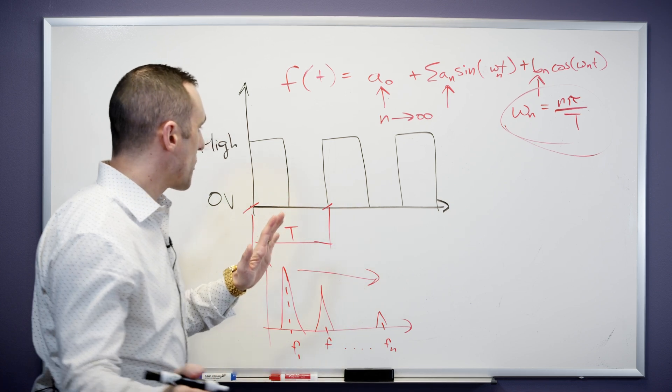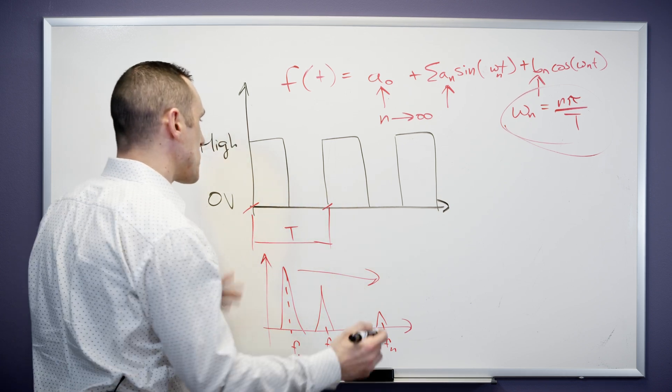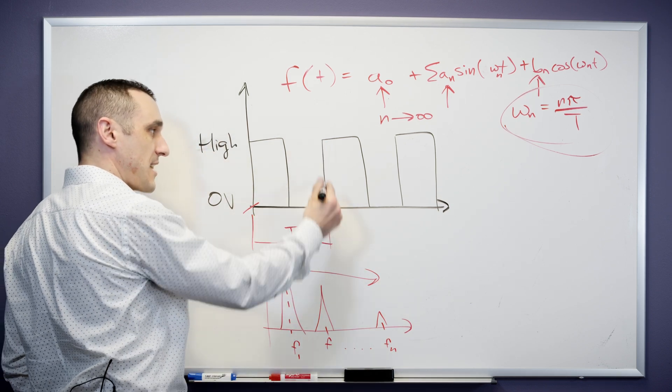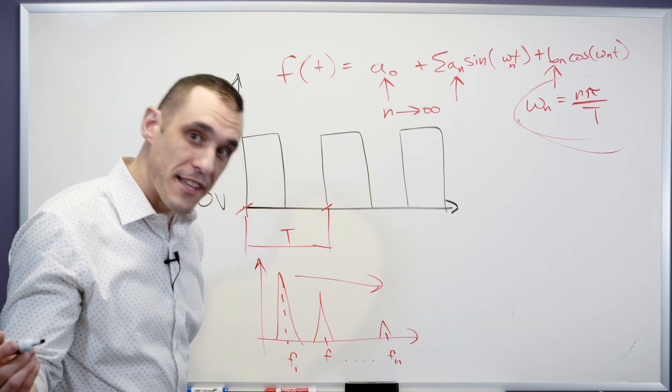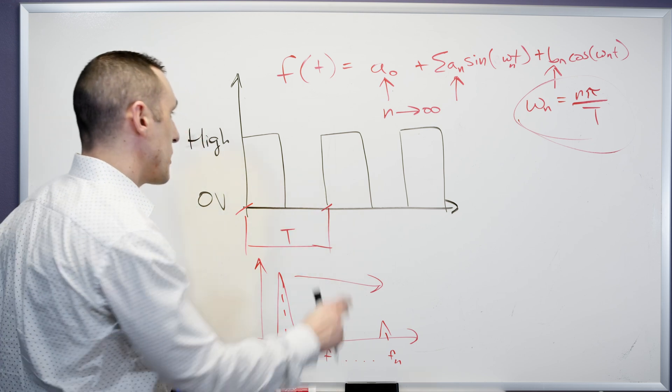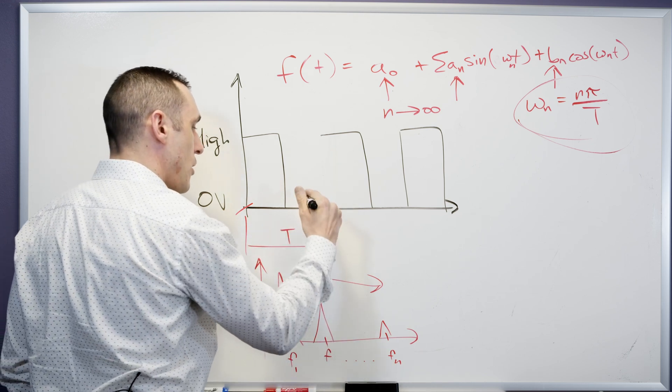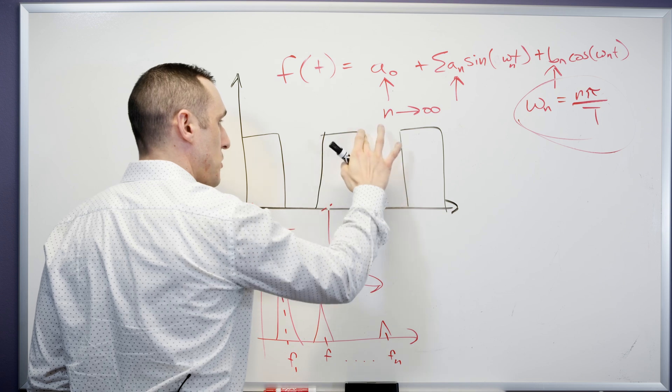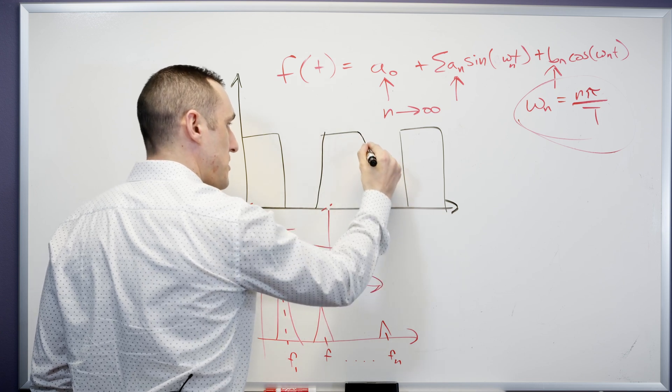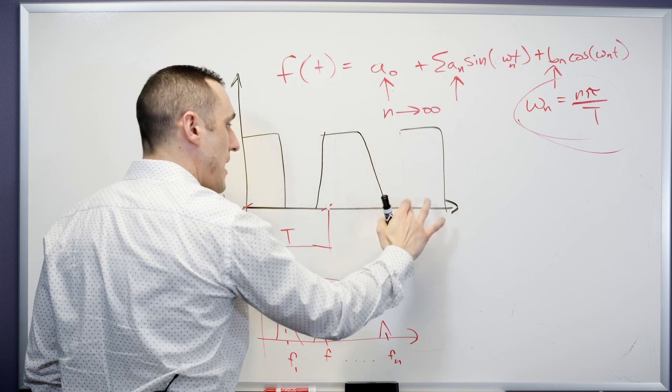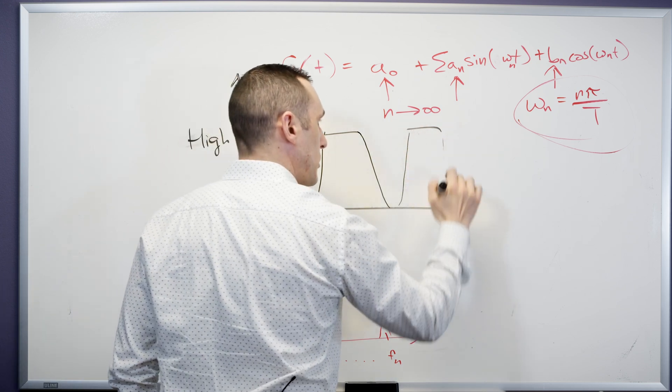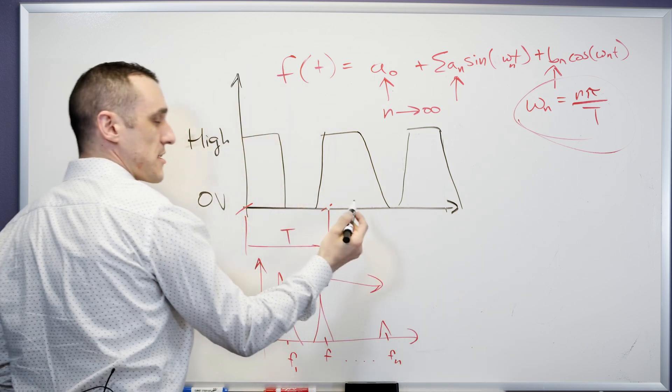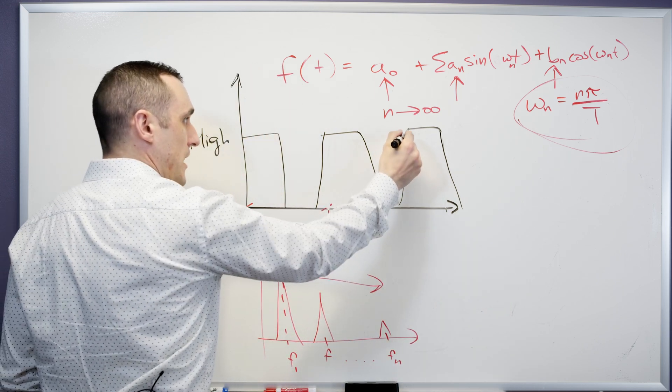When we draw out this square wave, typically we've just assumed that there's an instantaneous transition between the low level and the high level. However, in reality, that's not how digital signals work. In reality, there's actually a rise time that is associated with these signal transitions. This rise time also determines what the power spectrum looks like. Here I've slowed down this edge rate so that it's not instantaneous.